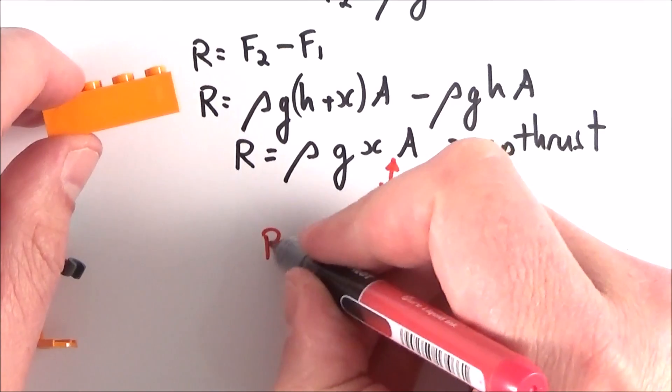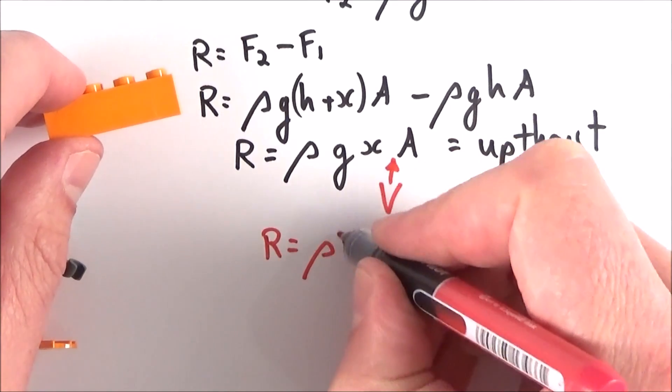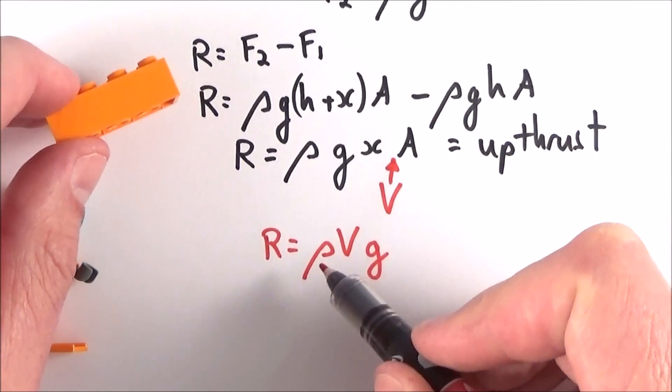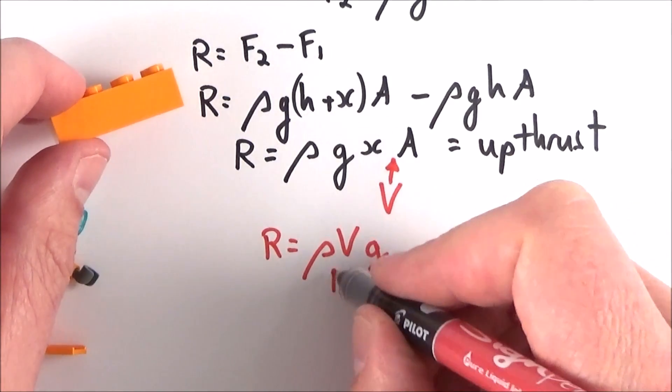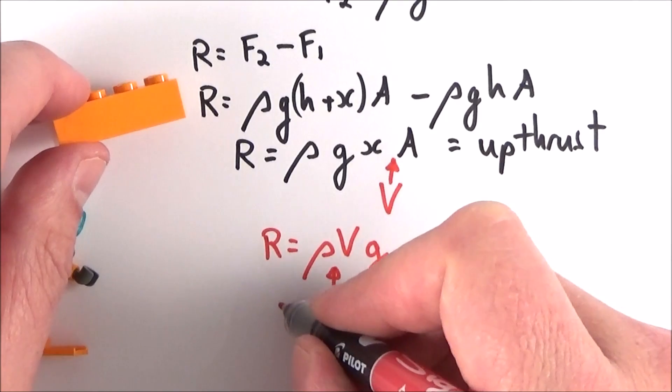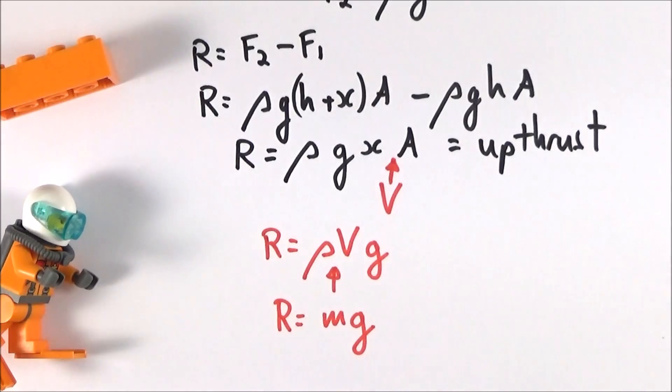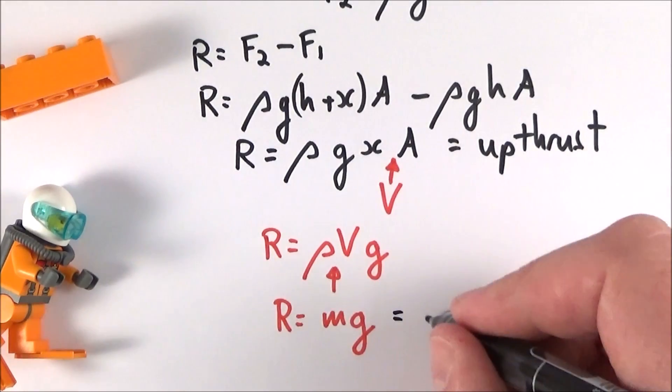Now we can say the resultant force is equal to ρVg. But if we look at the volume multiplied by the density of an object, this is then equal to the mass, and therefore the resultant force is equal to mg. And if we think about what mg is representing, well this is just equal to the weight.